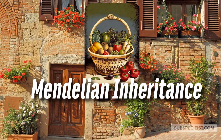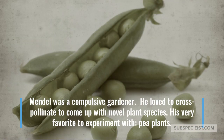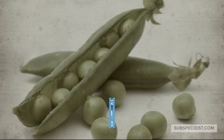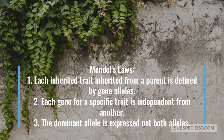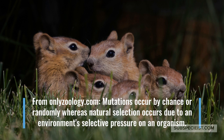Mendelian Inheritance. Gregor Mendel was a mild-mannered 18th century botanist and part-time teacher in Monrovia. Mendel was a compulsive gardener who loved to cross-pollinate to come up with novel plant species. His very favorite to experiment with? Pea plants. Mendel's Laws: 1. Each inherited trait from a parent is defined by gene alleles. 2. Each gene for a specific trait is independent from another. 3. The dominant allele is expressed, not both alleles. Mutations occur by chance or randomly, whereas natural selection occurs due to an environment's selective pressure on an organism.